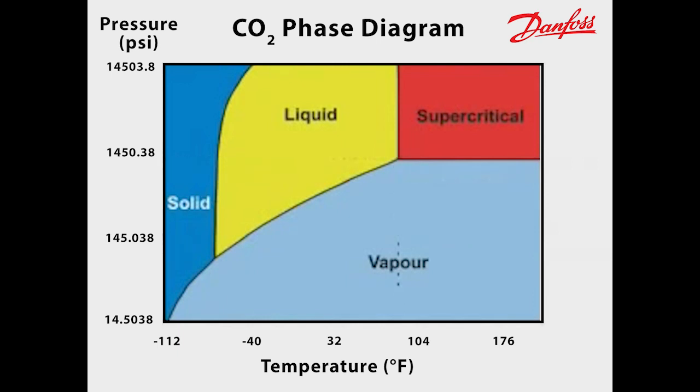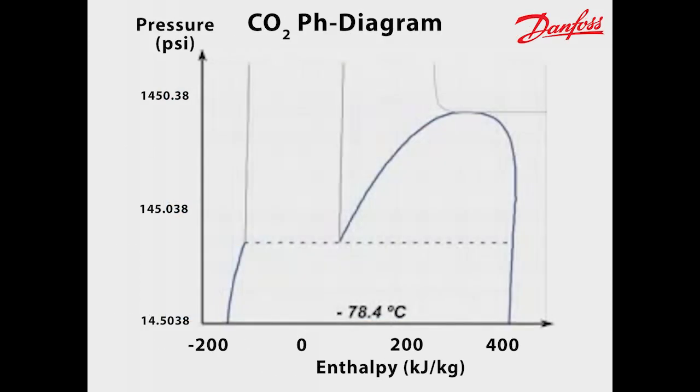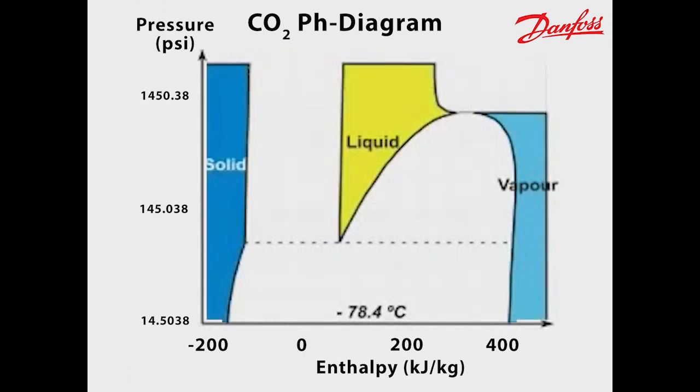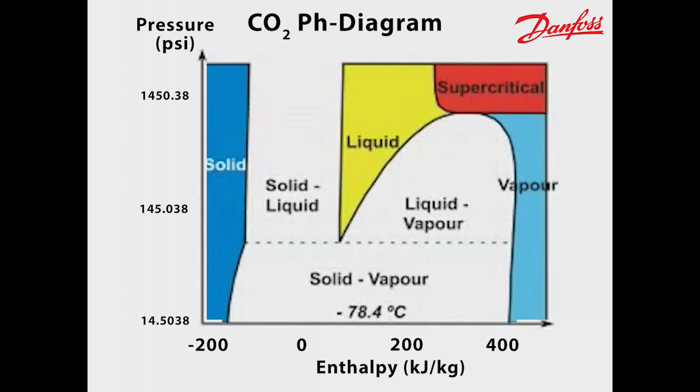The pressure enthalpy diagram is typically used for refrigeration purposes. For CO2 applications, this diagram must be extended to include the solid and supercritical phases. The colored areas indicate the different phases of CO2, namely vapor, liquid, solid, and supercritical. The triple point is here, and the critical point is here.